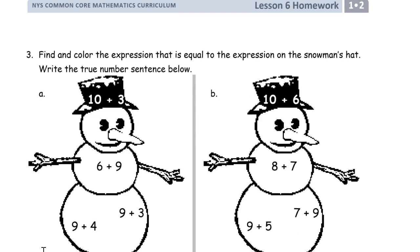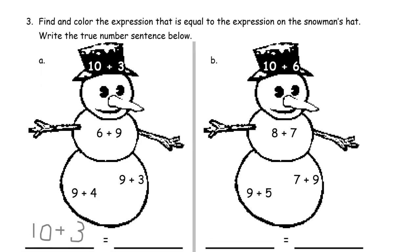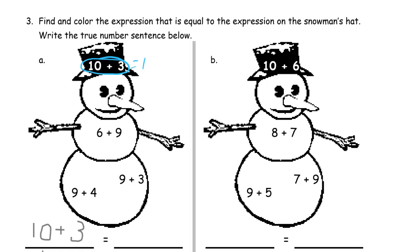Now it says find and color the expression that is equal to the expression on the snowman's hat, and write the true number sentence below. So these are all expressions. Ten plus three is an expression — that's thirteen. We're going to find one of these that also equals thirteen. Here's nine plus four — that's the same as ten plus three. That one's thirteen. So I write: ten plus three equals nine plus four, which was on the snowman's body.